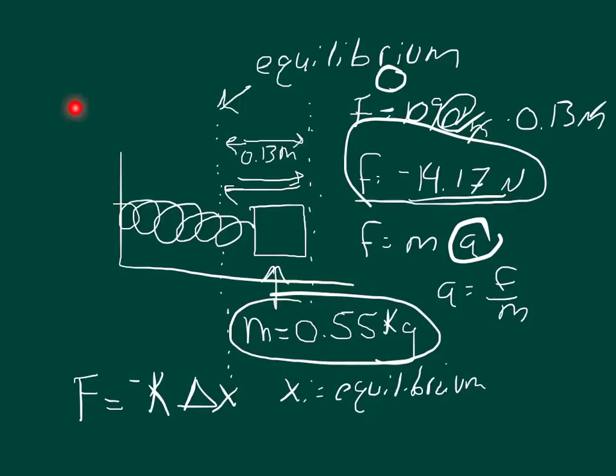So the acceleration is equal to the negative 14.17 newtons divided by the mass of 0.55 kilograms. When you plug that into your calculator, you should get that the acceleration is equal to negative 25.76 meters per second squared.